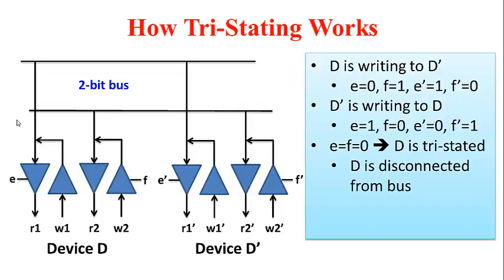This state is useful, for example, when device D is not at all involved in any bus transaction and let's say device D' is communicating with a third device, not shown in this diagram.